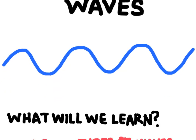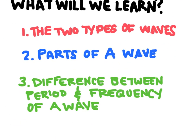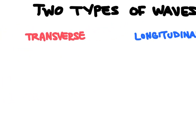In this video we're going to learn about waves. We're going to learn the two different types of waves, how to describe the different parts of a wave, and finally the difference between the period and the frequency of a wave. So let's start with those two different types of waves.